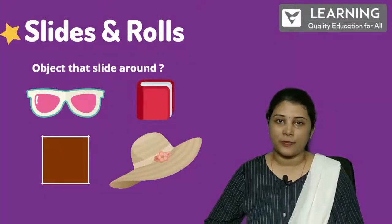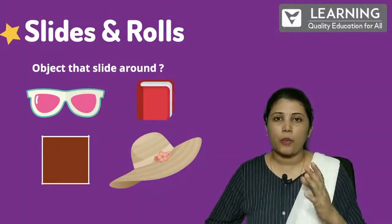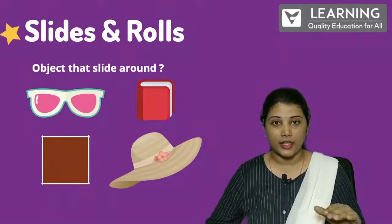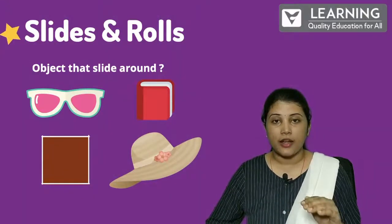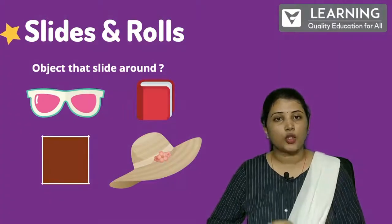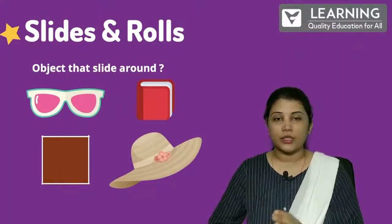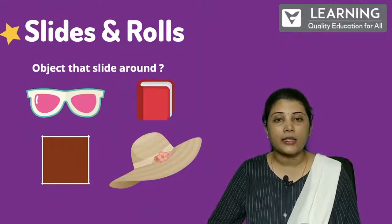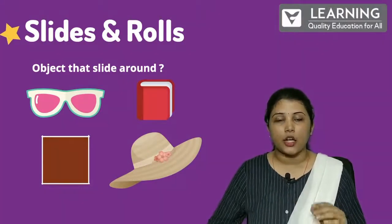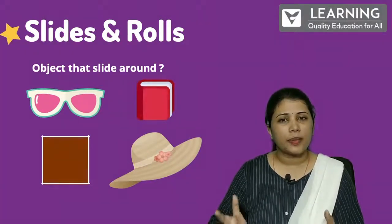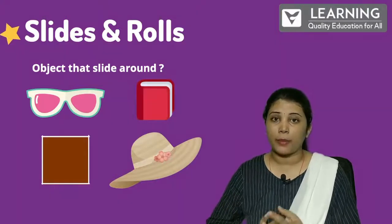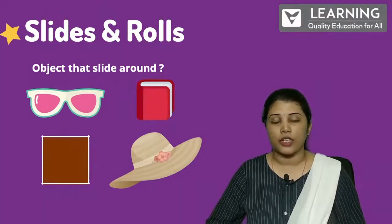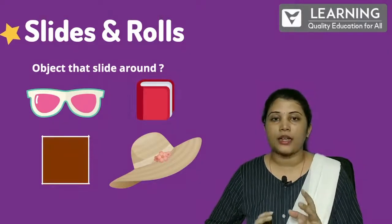It will simply slide. Box has a plain surface — at the bottom it's having a plain surface, so it will also not roll; it will simply slide. Hat is having a plain surface — not as plain as a book, but yes, it will also slide down. It won't roll.